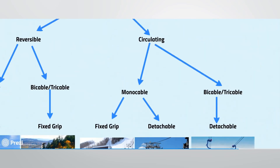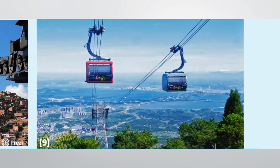The final branch on the tree is circulating bi-cable and tri-cable systems. These lifts use track ropes like an aerial tram to achieve longer spans while maintaining the benefits of consistently arriving detachable carriers. Bi-cable systems have been around for a long time, but tri-cable systems, like the one shown here in Lushan, China, are a newer technology that is revolutionizing the ropeway industry. These lifts can have very large capacities, incredibly long overall lengths, and travel routes never before thought possible for aerial ropeways.